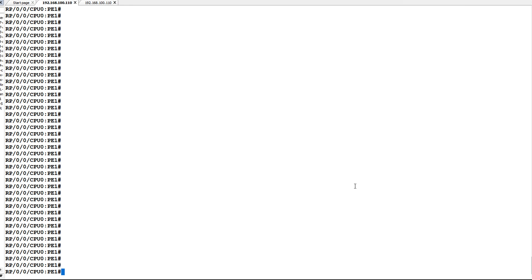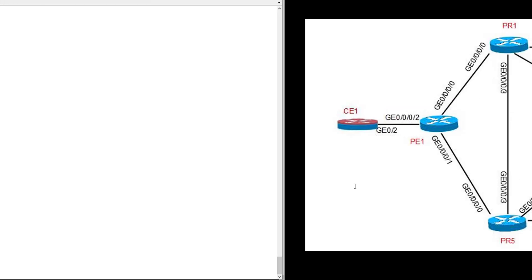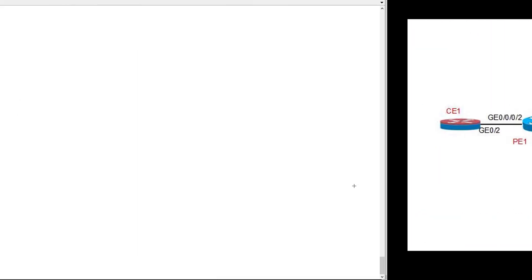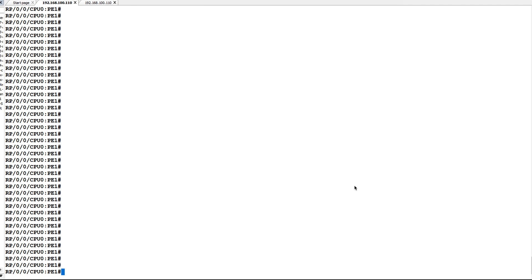I am going to showcase how to enable segment routing and how to configure it on Cisco IOS XR. Before proceeding with the configuration, let us check our topology. Our topology has P1 and P2 as provider hub routers, and from PR1 to PR6 we have provider routers. C1 and C2 are customer routers that don't have any functionality we will show in upcoming videos.